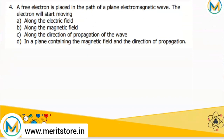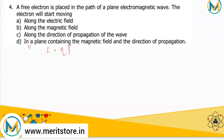The next question: a free electron is placed in the path of a plane electromagnetic wave. Will it start moving along the electric field, along the magnetic field, along the direction of propagation, or in the plane containing the magnetic field and direction of propagation? A particle placed in an electromagnetic wave moving with velocity v experiences a Lorentz force due to the electric and magnetic fields. This Lorentz force is given by F = q(E⃗ + v⃗ × B⃗), where q is the charge, E⃗ is the electric field, v⃗ is the velocity, and B⃗ is the magnetic field.